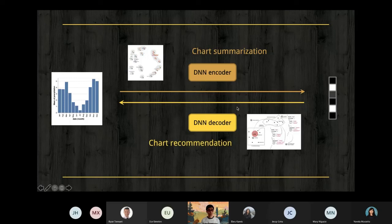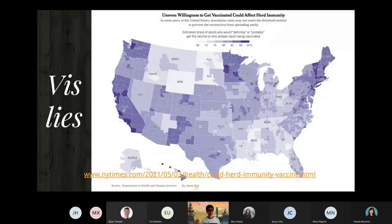By using the encoder, we can convert any chart into a vector. So we will be able to generate this kind of summarization by just simply computing their similarity based on this vector. Using the decoder, which is the reverse process, we can do a recommendation. If the user clicks somewhere in the empty space, we will get a vector, and that vector can be input to the decoder to generate new charts. More information can be found in my paper.